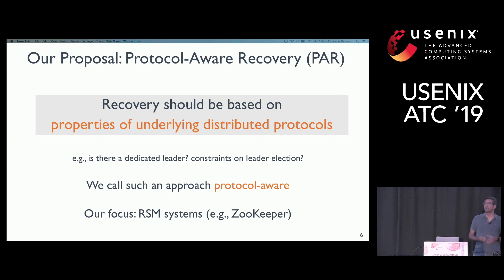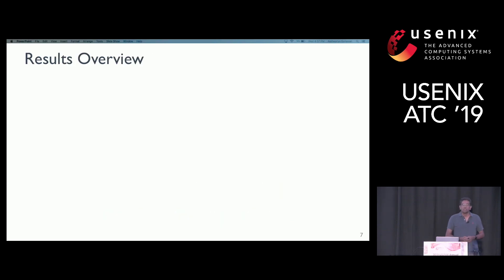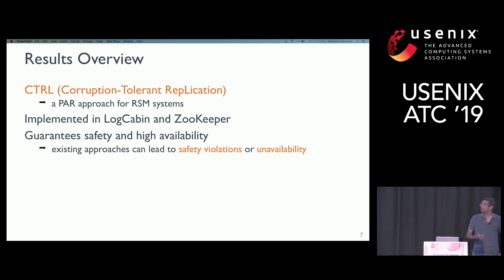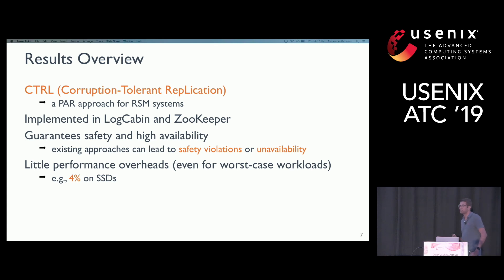We call such a recovery approach a protocol-aware recovery approach. In this work, we focus on a special class of distributed systems called replicated state machines, or RSM systems. Examples include widely used systems such as Zookeeper. We have implemented something called corruption-tolerant replication (CTR), a protocol-aware recovery approach for RSM systems, implemented in two systems: LockCabin and Zookeeper. Experiments show that CTR offers safety and high availability in the presence of storage faults, whereas unmodified systems can lead to data loss or unavailability. These reliability improvements come at little or no performance overhead — for example, only 4% overhead when running on SSDs.